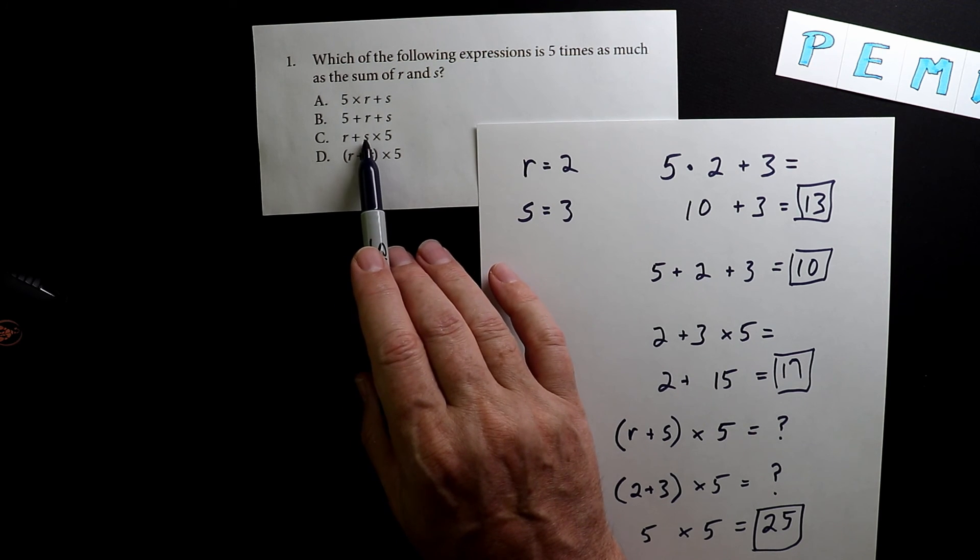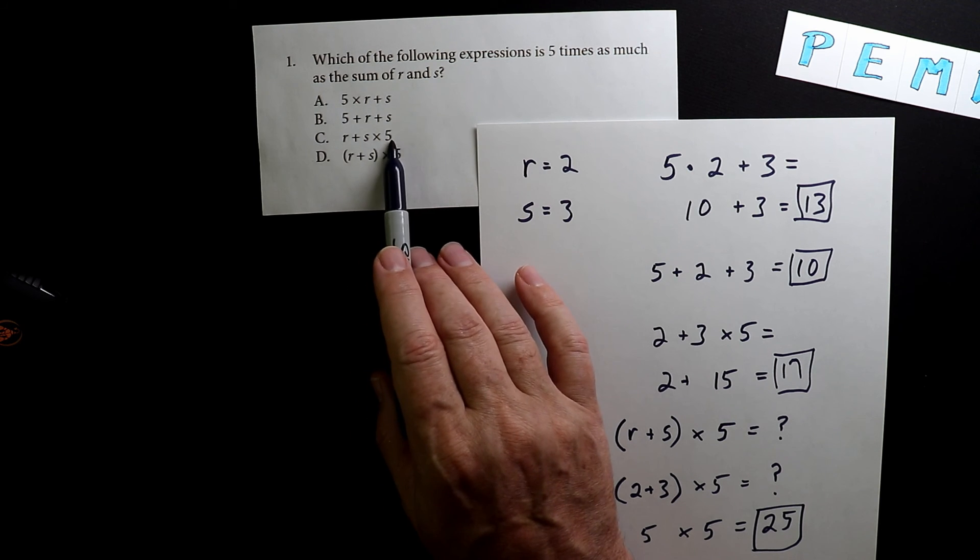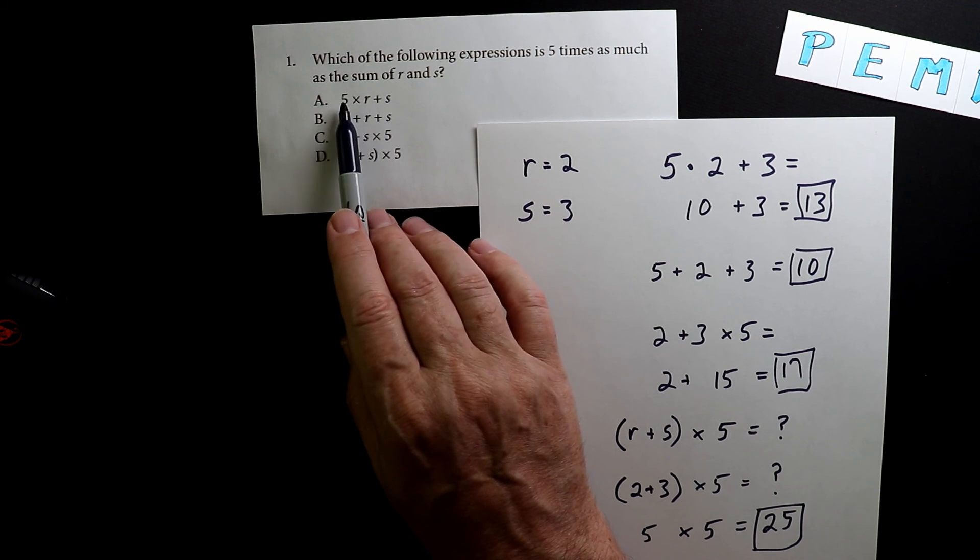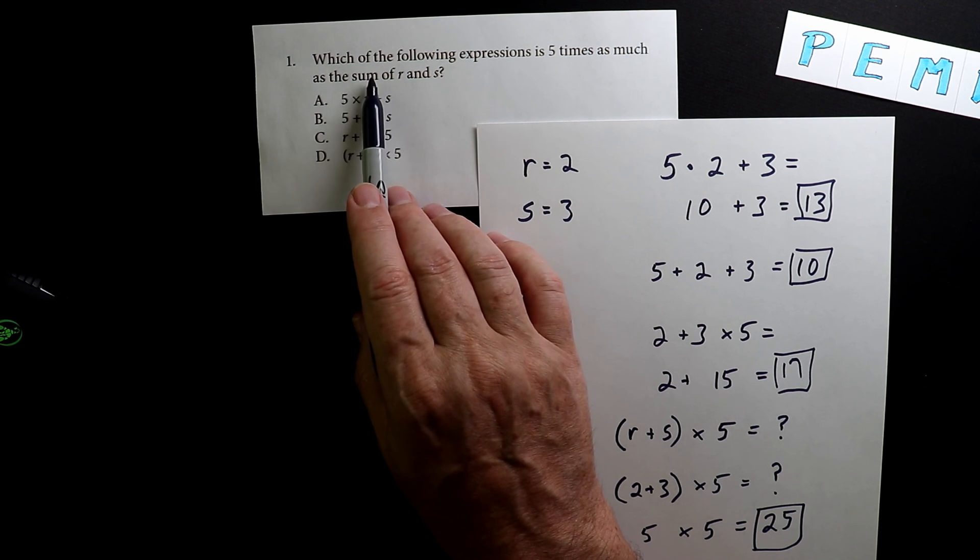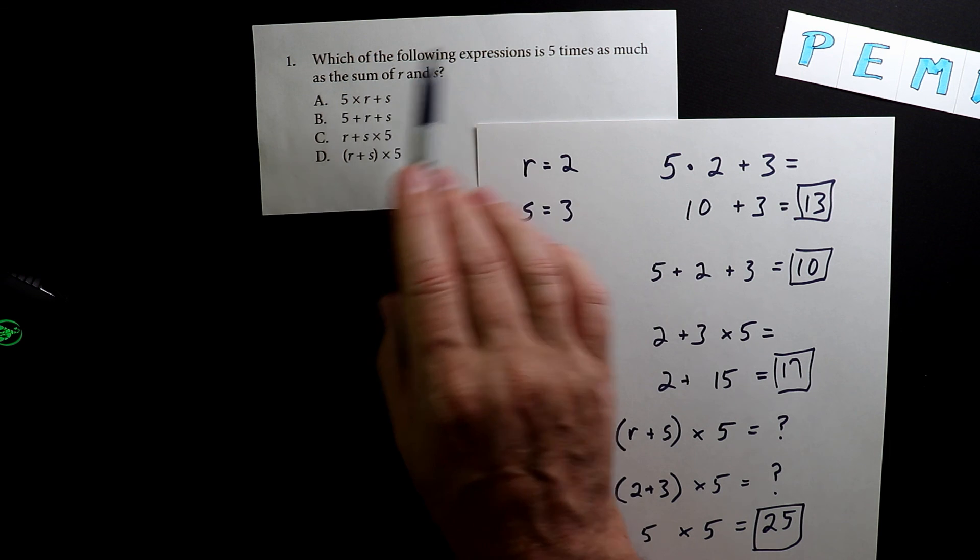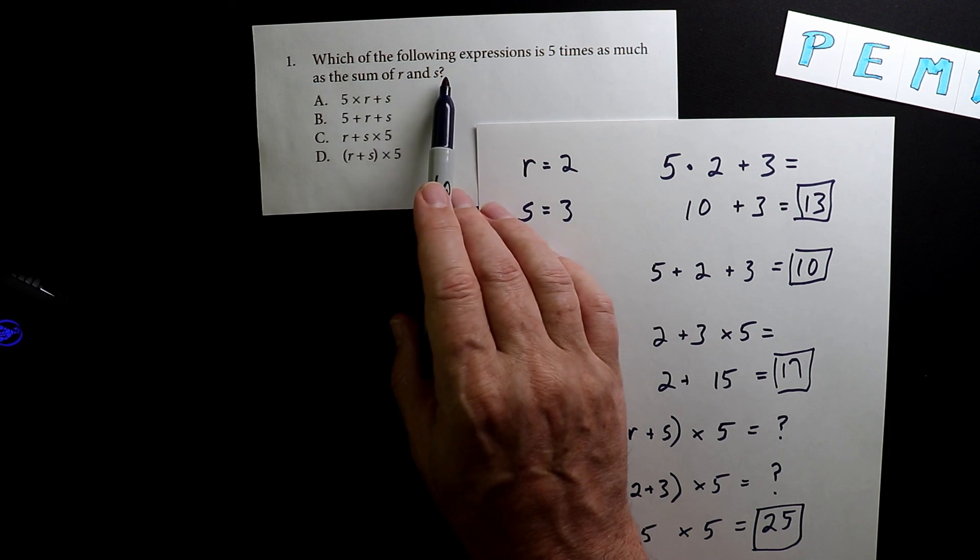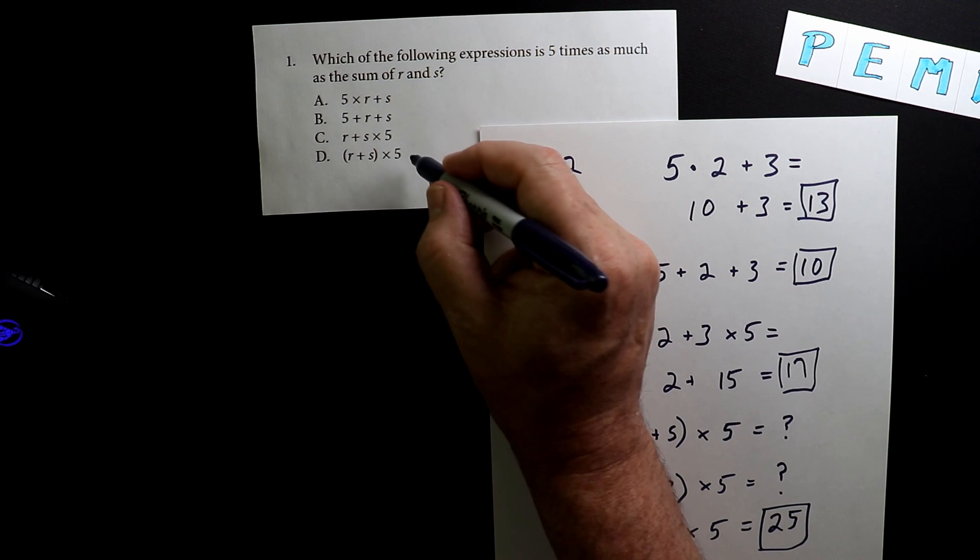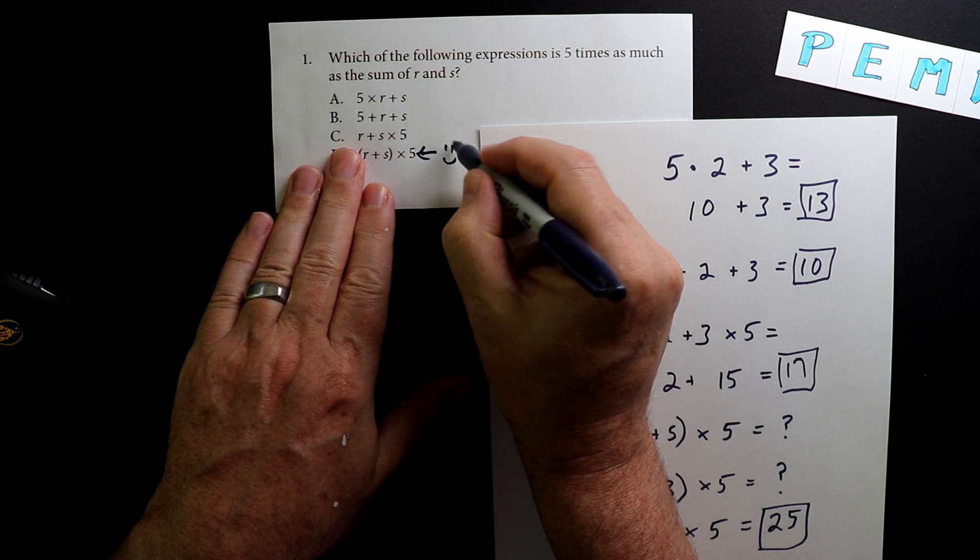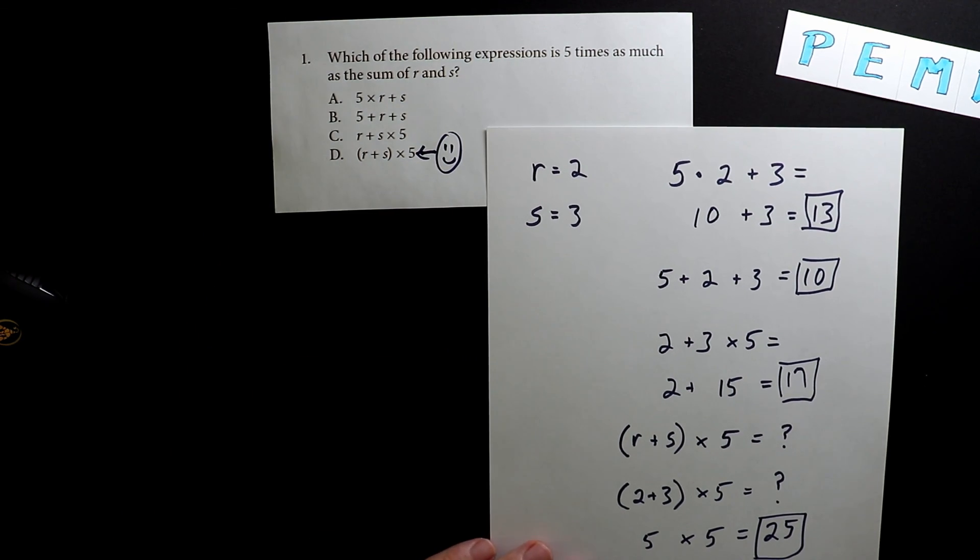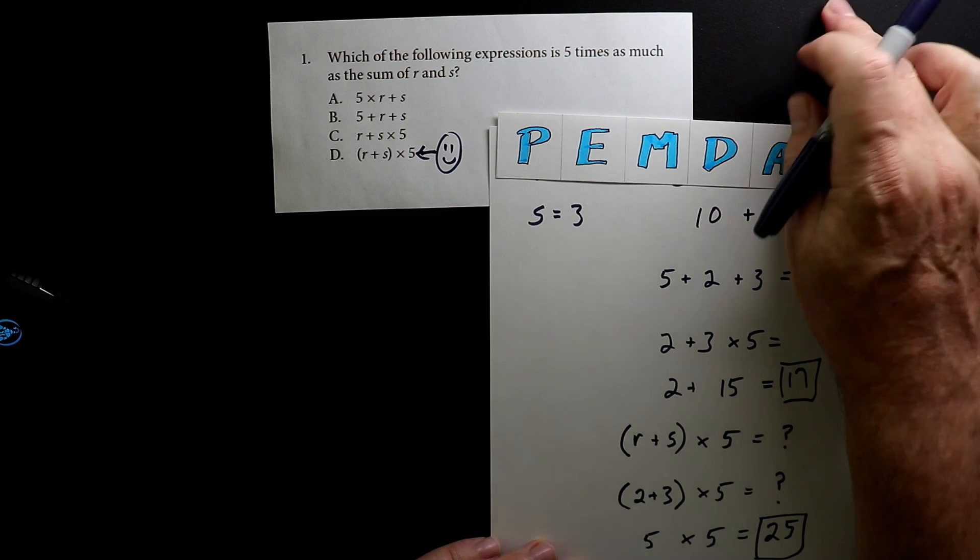Here the s is multiplied by 5 and the r isn't. Here the r is multiplied by 5 and the s isn't. What they're asking is for 5 to multiply the sum of r and s, and that's this one. That's the only answer that is correct. If you don't know the order of operations, use this video.